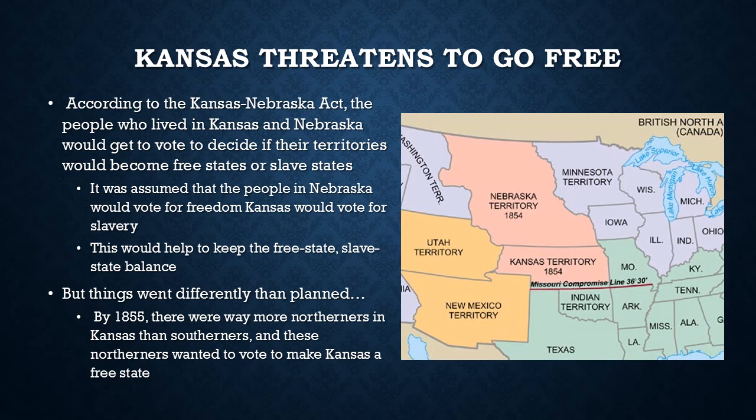As we talked about a few days ago, the Kansas-Nebraska Act divided the remaining territory of the Louisiana Purchase up into two territories. The people in these territories were going to vote on whether they would become free states or slave states. The bill assumed that Nebraska would go free because it was up north, and that Kansas would be voted a slave state because it bordered other slave states like Missouri.